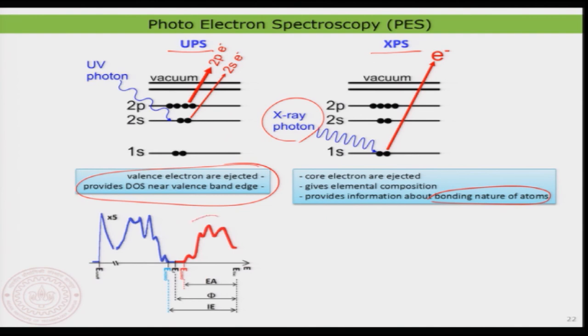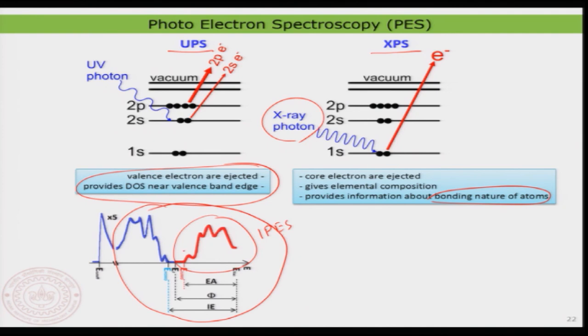We also looked at inverse photoelectron spectroscopy, where instead of shining photons you inject electrons into the system and look at the emitted photons. Combining UPS and inverse photoelectron spectroscopy gives you the complete electronic structure of the surface, interface, or thin films — including the band gap, conduction band edge, valence band edge, and density of states. We also used combinations of XPS, AFM, and STM to collectively understand these techniques through several case studies.